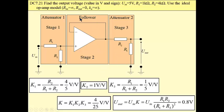Once again, I am not going to prove that this is a follower. And then gain of the third stage, second attenuator is 1 over 5. Then the total gain is 4 over 25. Which means that output voltage for the input voltage of 5 is 0.8 volt.